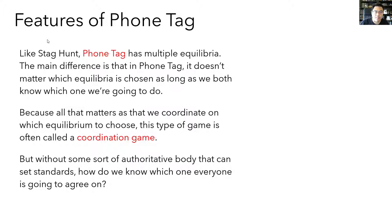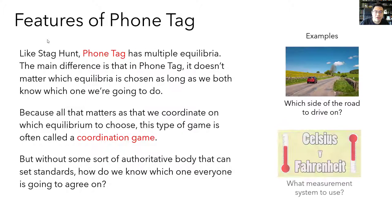In coordination games, some kind of authoritative body is usually needed to set the standard so that everyone knows which equilibrium to coordinate on — like which side of the road to drive on, or what units of measurement to use. But if there's no authoritative body, people usually won't know which equilibrium to choose — and hence we have Phone Tag as a real-life experience. Maybe you can work it out with your friends and family what your standards are.